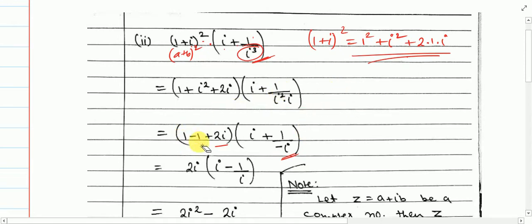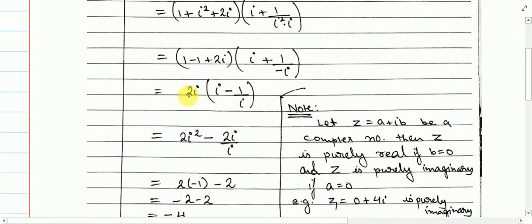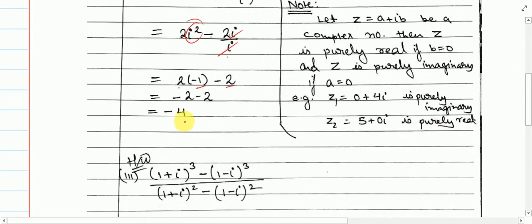So now we have 2i × (i + 1/(−i)). Multiplying inside: 2i × i = 2i², and 2i divided by i — the i's cancel — giving 2. Here i² = minus 1, so 2 × (−1) = minus 2. Then minus 2 minus 2 gives minus 4.